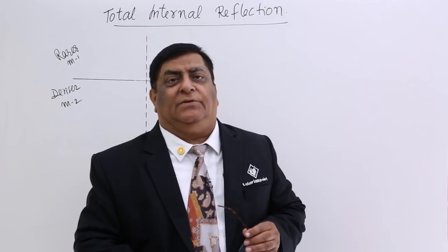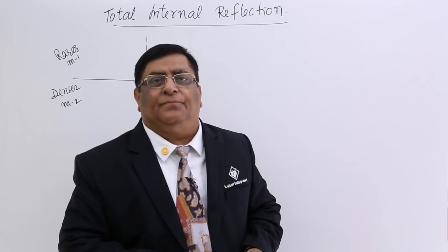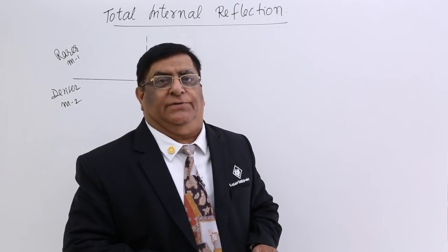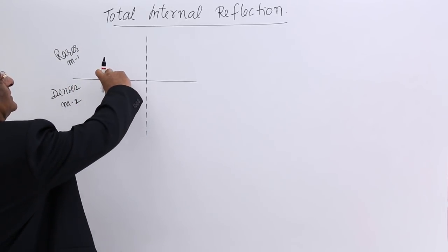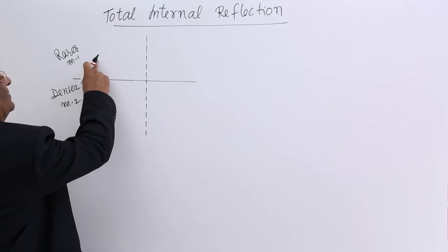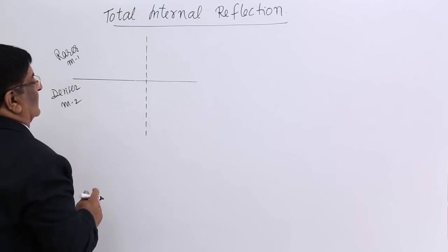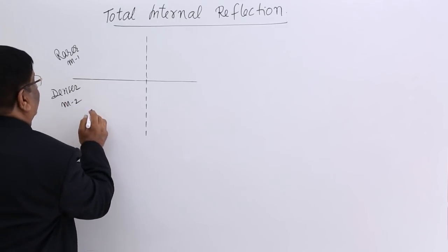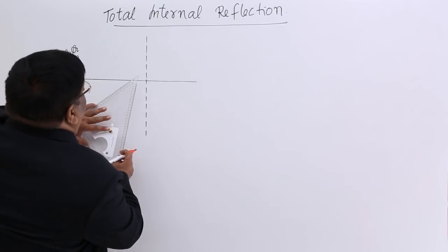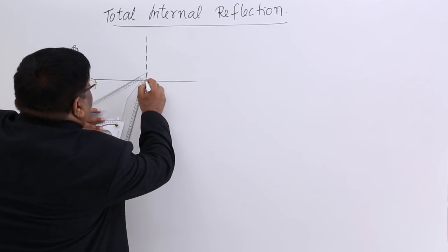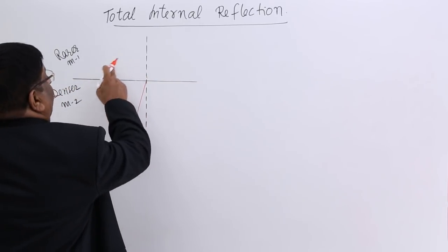Today we will see another phenomenon which is total internal reflection. This is related to refraction. There are two mediums across an interface — medium 1 and medium 2. We have an incident ray, a source of light in medium number 2. This source of light sends a ray and this is a denser to rarer situation.